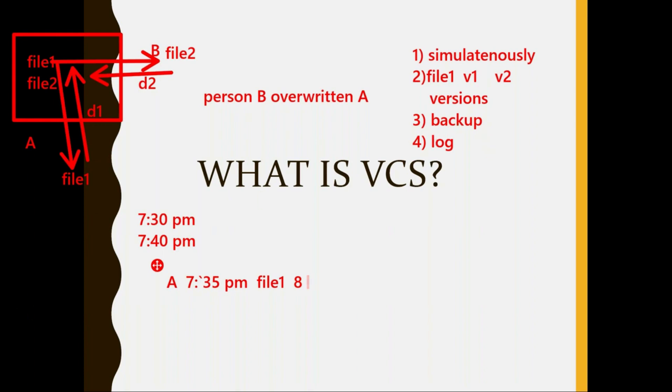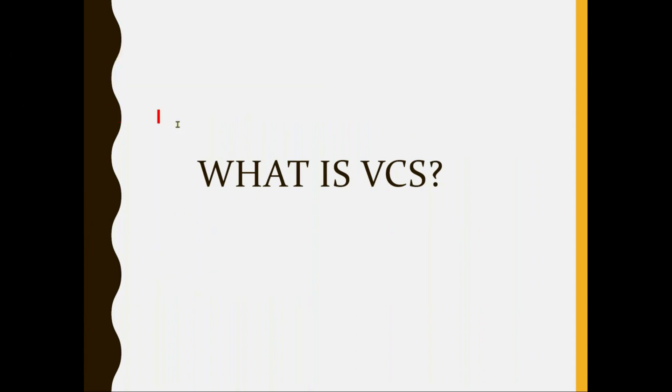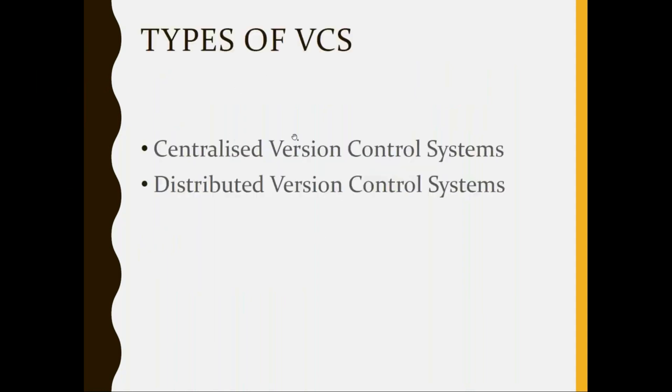Now that we understand what a version control system is, let us talk about different types of version control systems based on the architecture. They are categorized as centralized version control systems and distributed version control systems. Let's see this categorization.